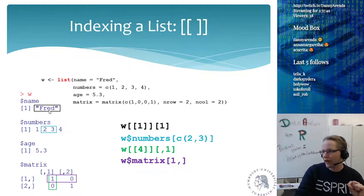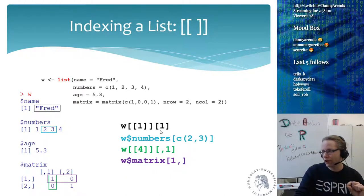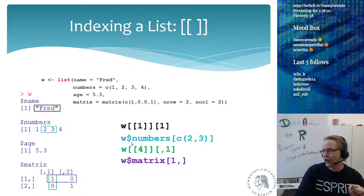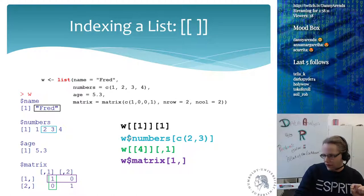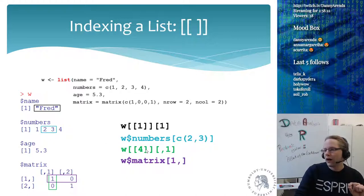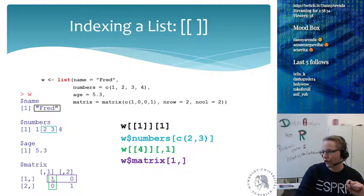To select the first element of a list, I use double square brackets and say: from w, give me the first element. It's much better to use the dollar sign to select from a list by name. So I can say w$numbers and then select the second and third elements, which returns 2 and 3. I can also select the fourth element and take the first column of the returned matrix, giving me [1, 0].